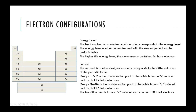When writing out electron configurations, the number out front is the energy level, and that's based on where the element is in the periodic table. In the case of hydrogen, it is in the first energy level, which is based on the period in the periodic table. The first row has an energy level of one, the second row energy level of two, three, four, and so on.